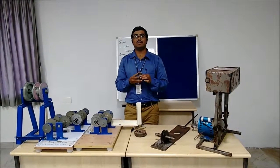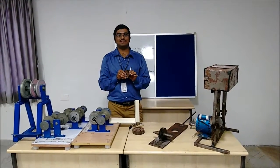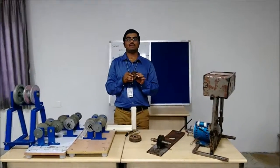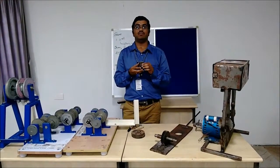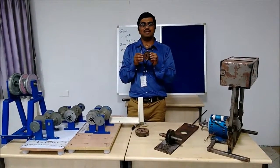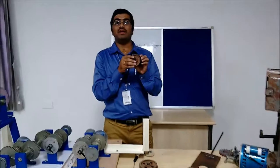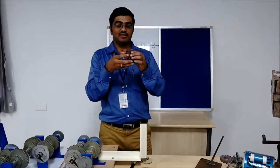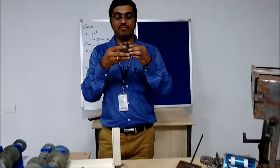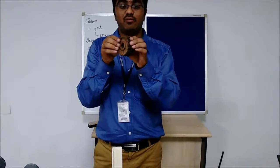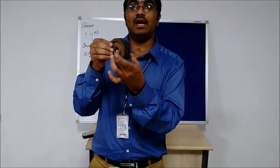Herringbone gears. To avoid axial thrust, two helical gears of opposite hands are mounted side by side to cancel the resulting thrust force. Here the axial thrust can be avoided. The two helical gears are meshed together, this is the herringbone gears. Herringbone gears are used in heavy machineries.